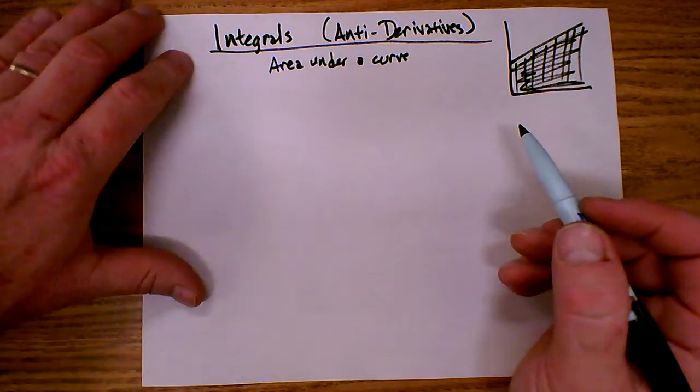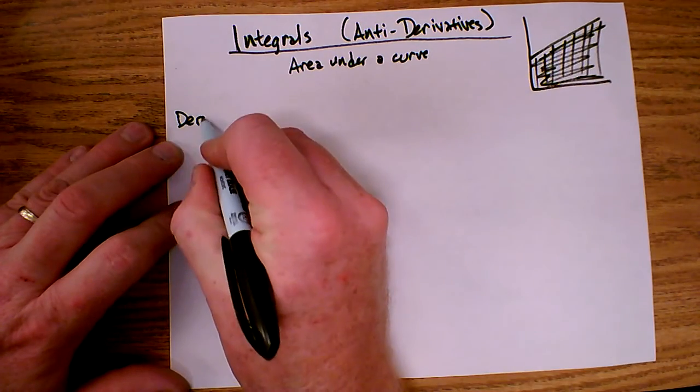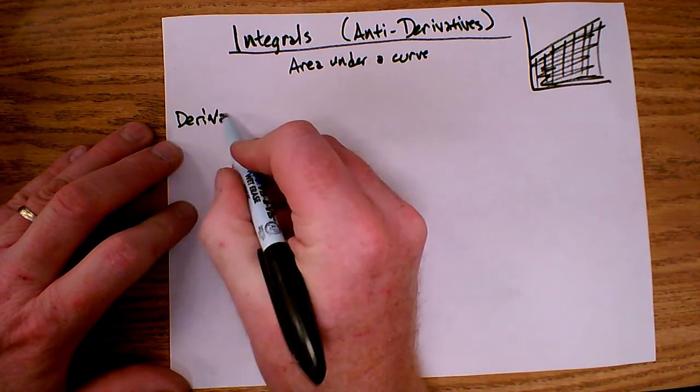So to take an integral, because it's an antiderivative, let's take just a moment and review derivatives really quickly. So derivative, fancy word for instantaneous slope.